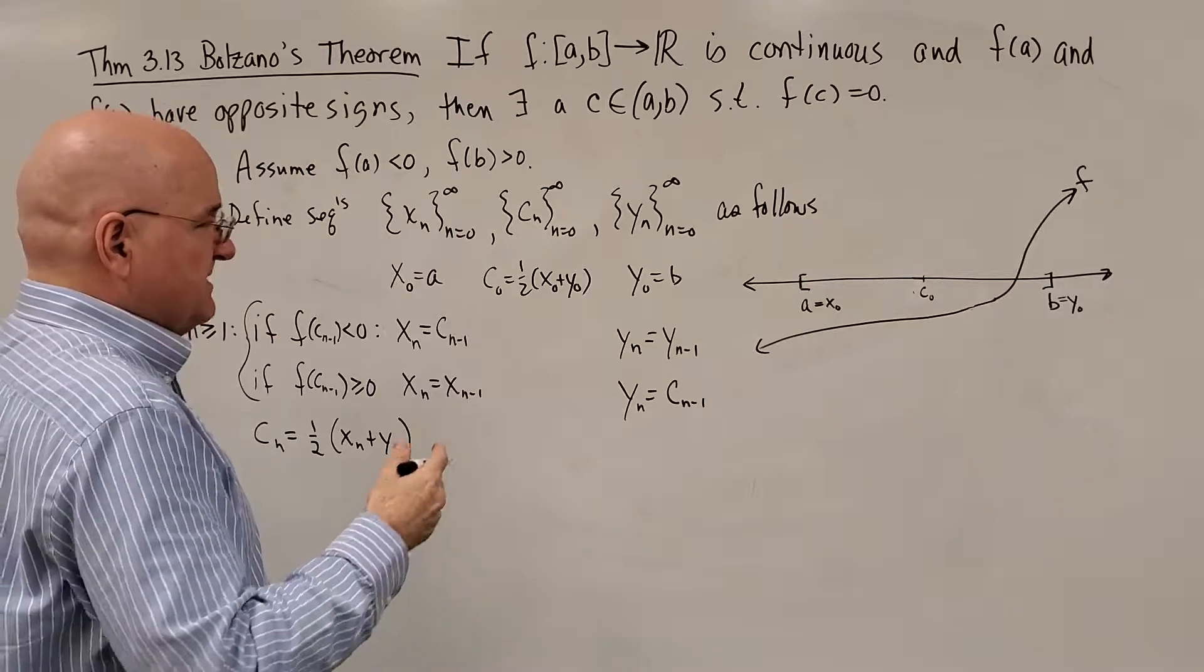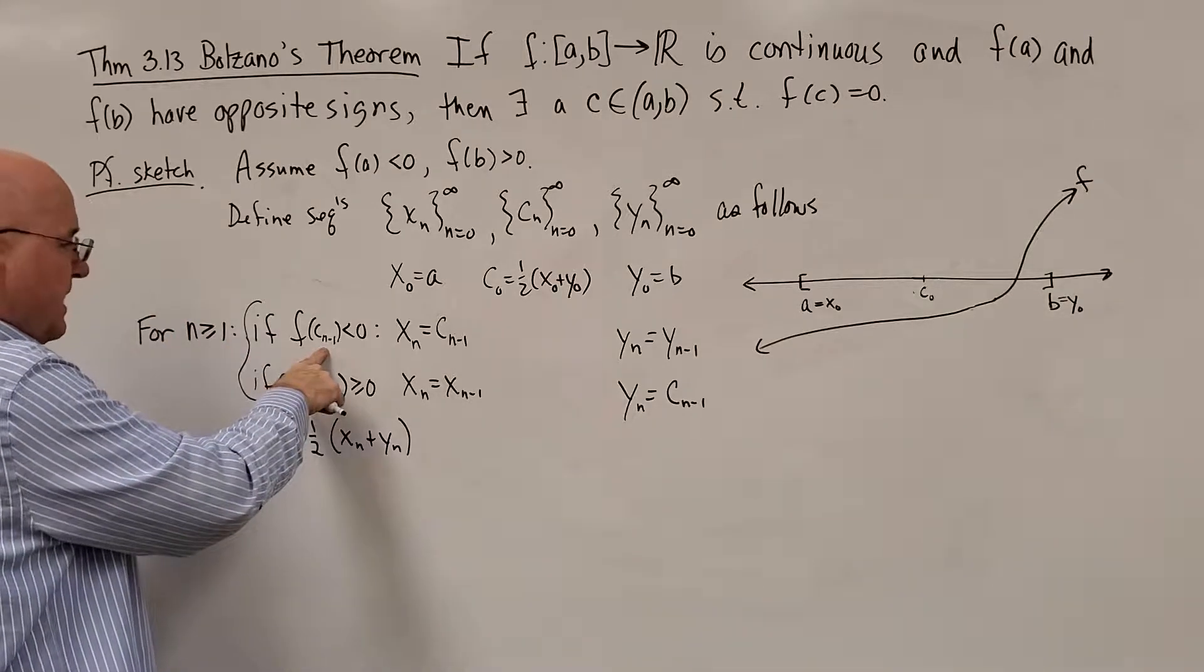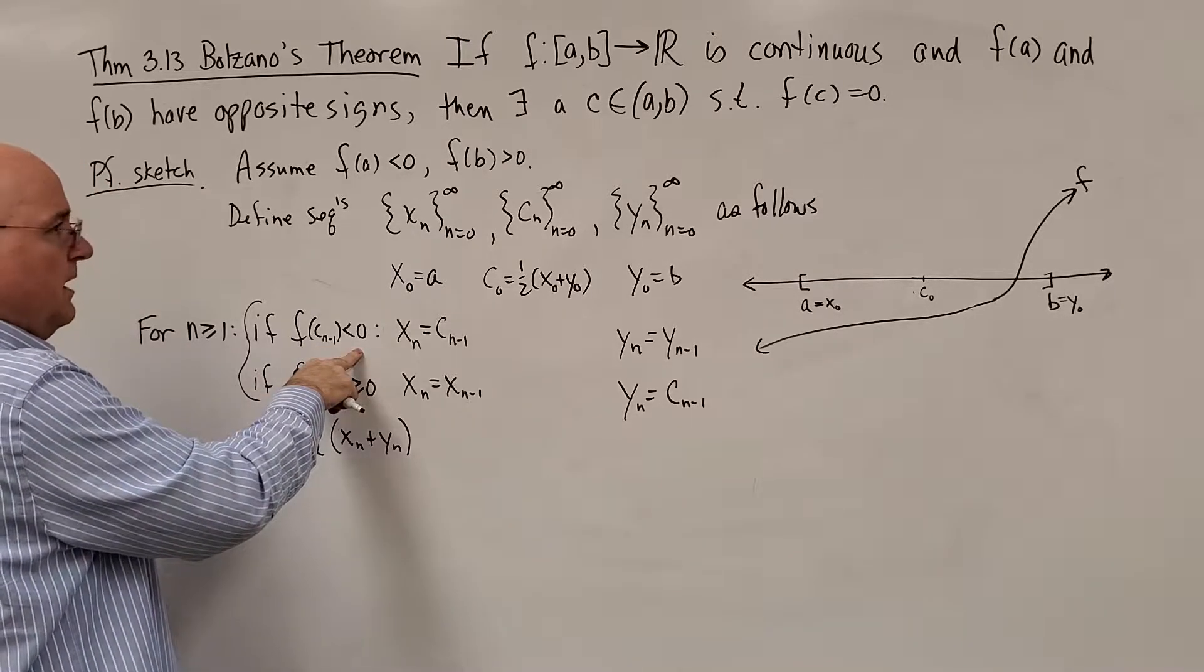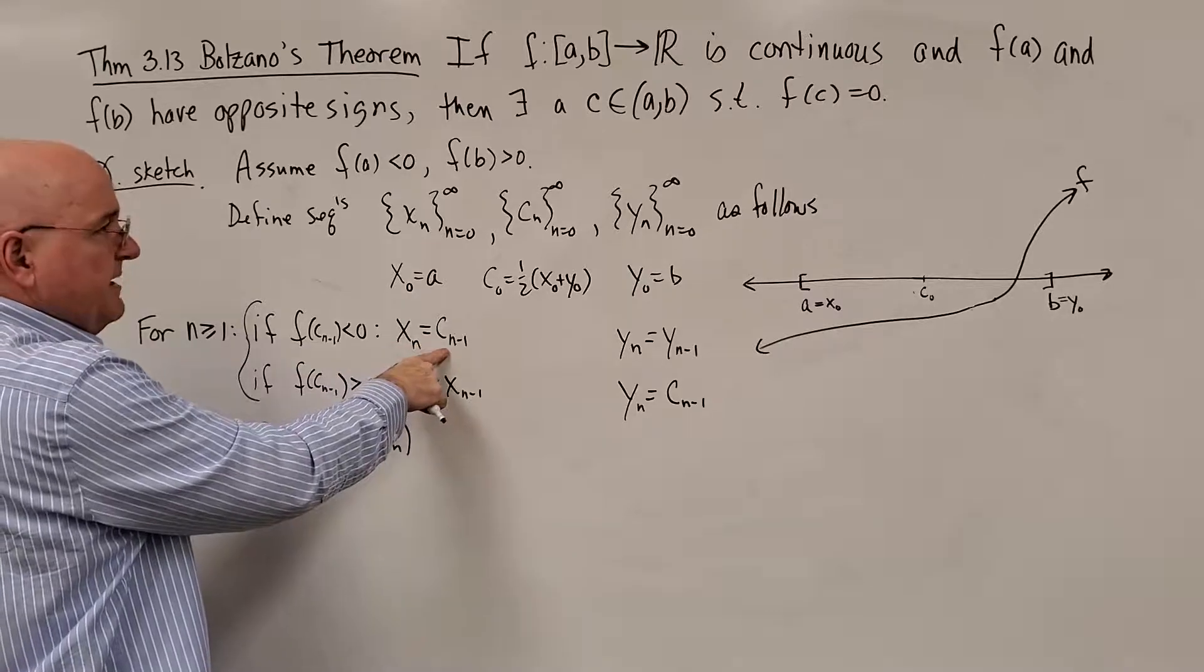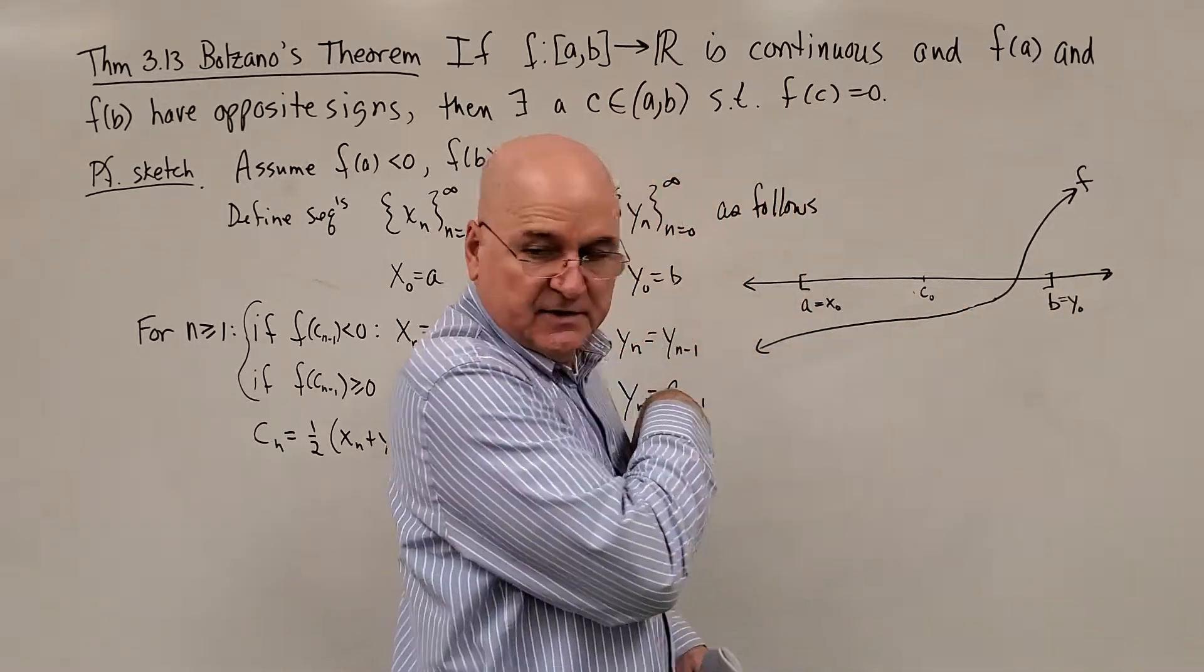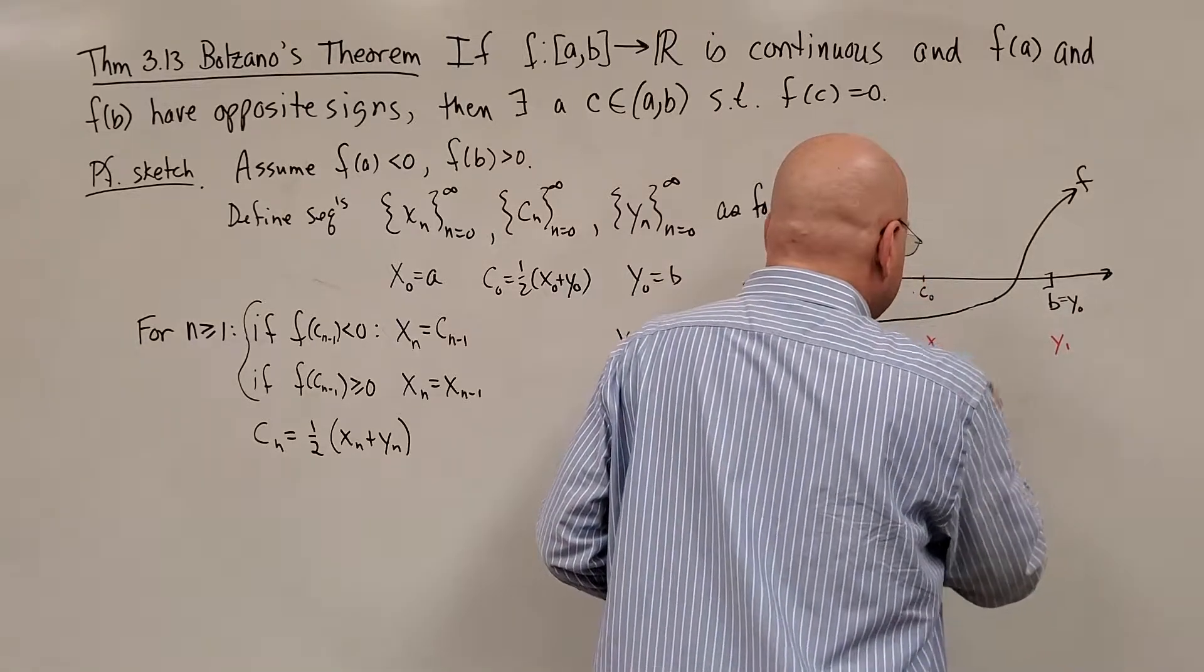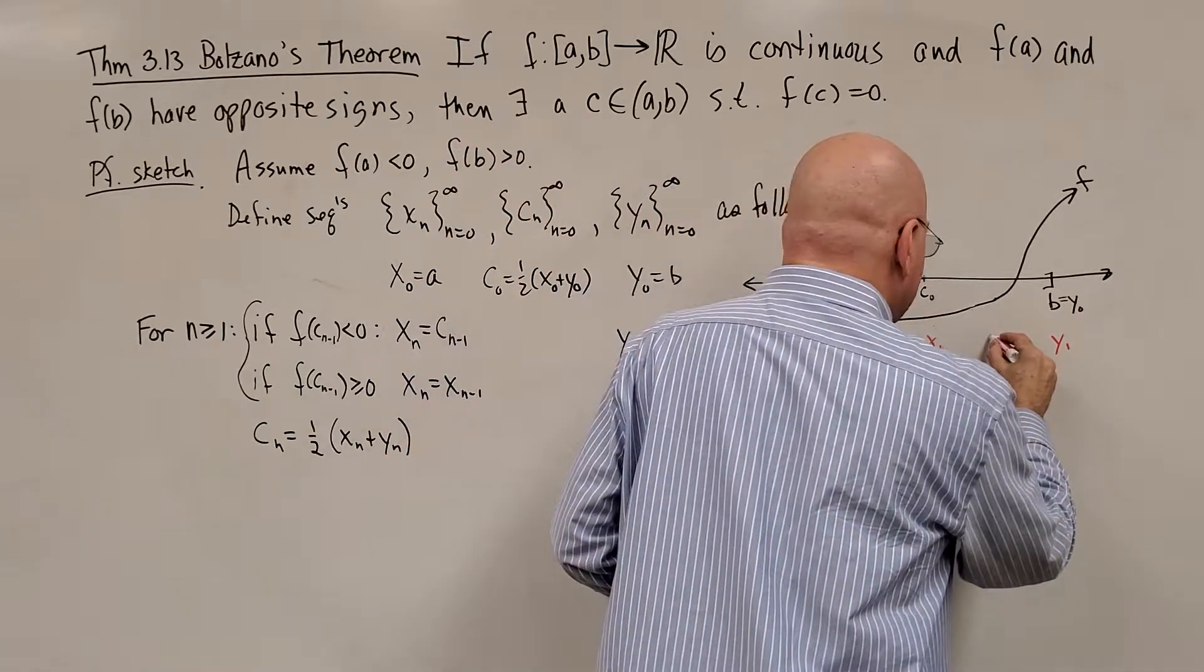The next element in the sequence, the three sequences, will be x_1, c_1, and y_1. And we go this way. If f of the previous one, see we're now on n equal one. If f of c_0 is less than zero, which it is, we're going to do this. Our new x_1 is going to become c_0. So we're going to shrink this interval in half. This is my x_1 now. Maybe I'll use an alternate different colors. x_1 is going to be here. y_1 is going to remain the same. No change there. So we just cut this interval in half, the width of it. And then c_1 is going to be the midpoint there.